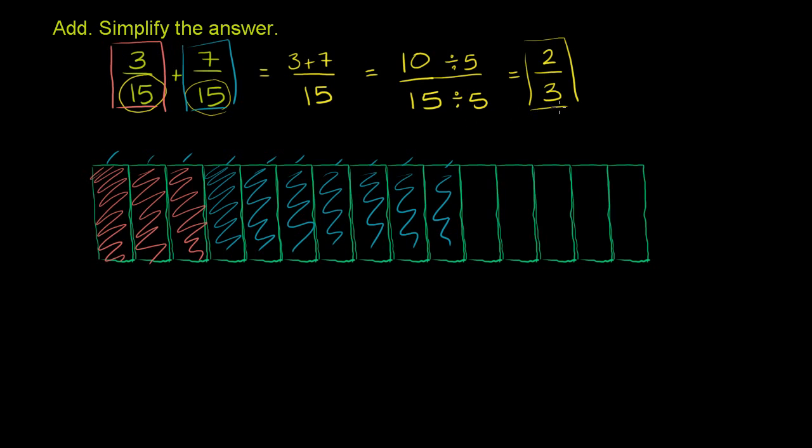And then to see why this is the same thing as 2/3, you can just split this candy bar into thirds. So each third would have five sections in it. So let's do that. 1, 2, 3, 4, 5. So that is 1/3 right there. 1, 2, 3, 4, 5. That is another third right there. And notice, when you do it like this, we have filled out exactly 2, 1, 2 of the thirds. This is the third third, but that's not filled in. So 10/15 is the same thing as 2/3.